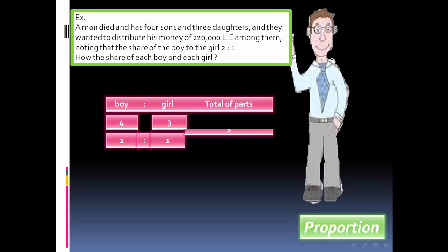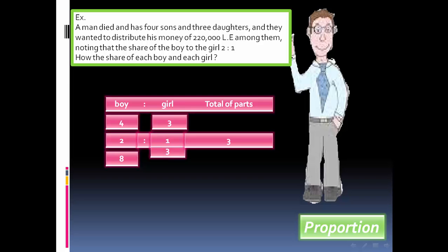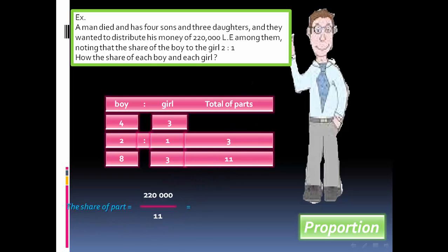4 times 2 equals 8, 3 times 1 equals 3, total of parts is 11. The share of 1 part equals 220,000 over 11, equals 20,000.